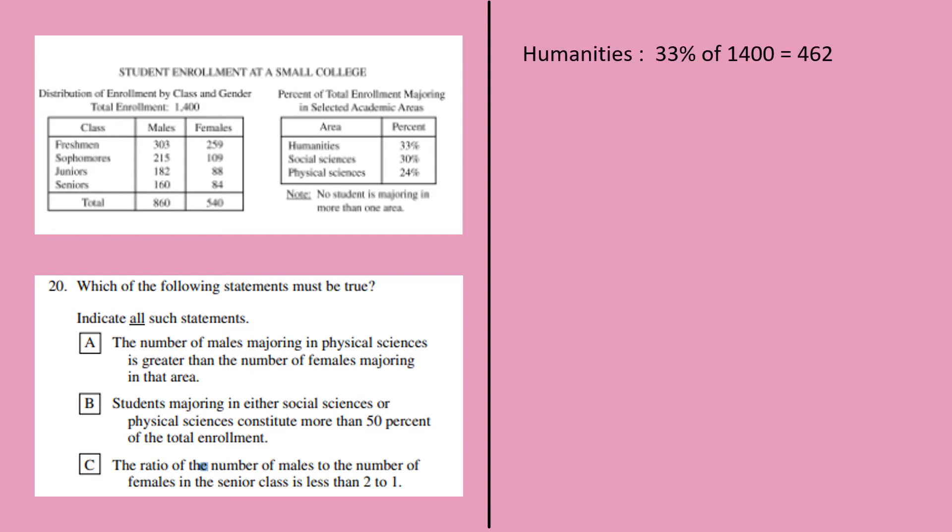33 percent of 1400 gives me 462 humanities students. 30 percent of 1400 gives me 420 students in social science. 24 percent of 1400 gives me 336 in physical sciences.